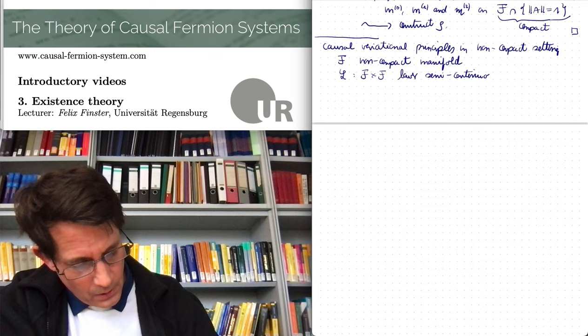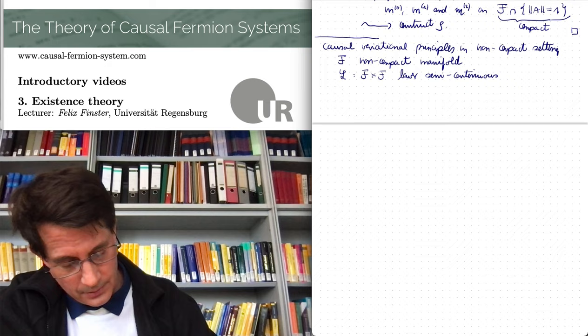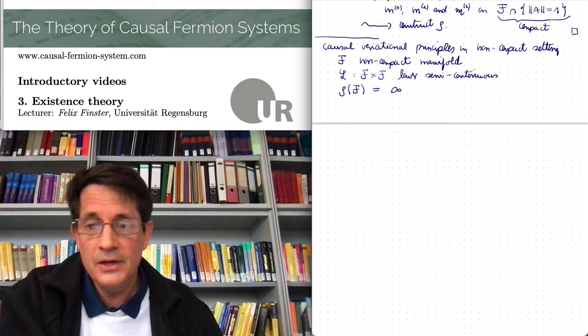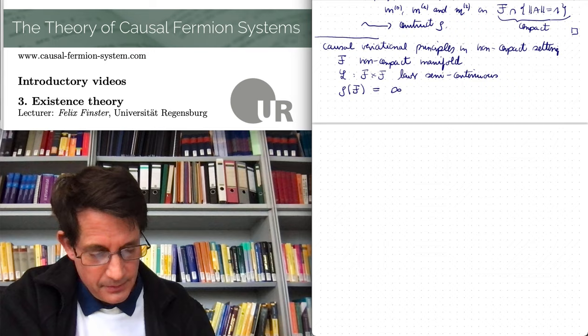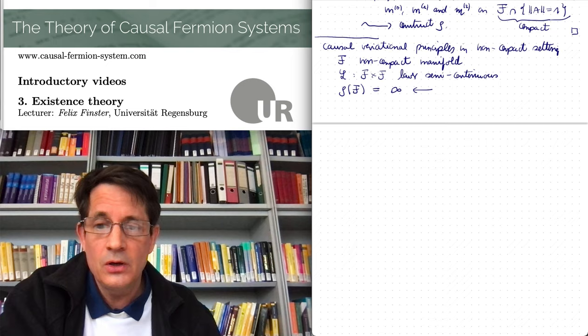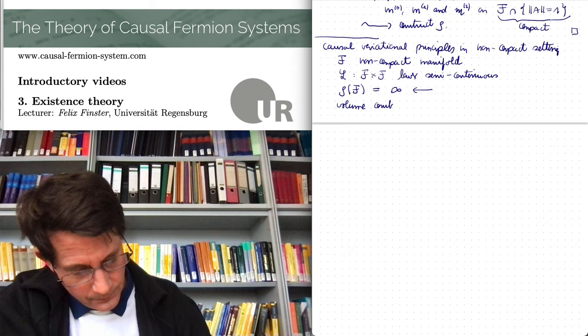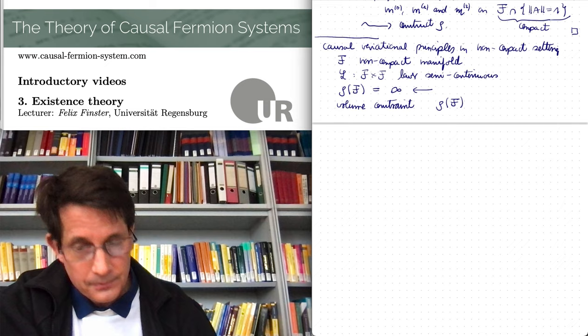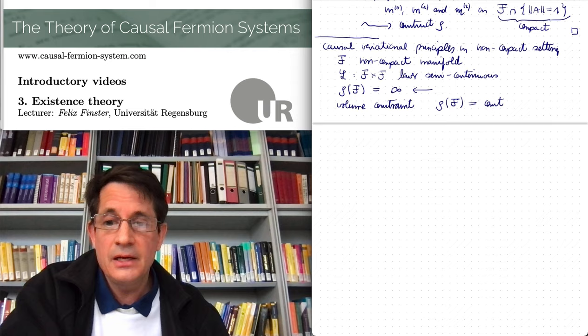Well, in this case one also needs to assume that the total volume is infinite. So rho of curly F is infinity. Otherwise it doesn't make sense. And this here leads to problems when we think of the volume constraint. So the volume constraint, well, I wrote it as the total volume is constant. But if this constant is infinity, this doesn't make sense, at least not a priori.